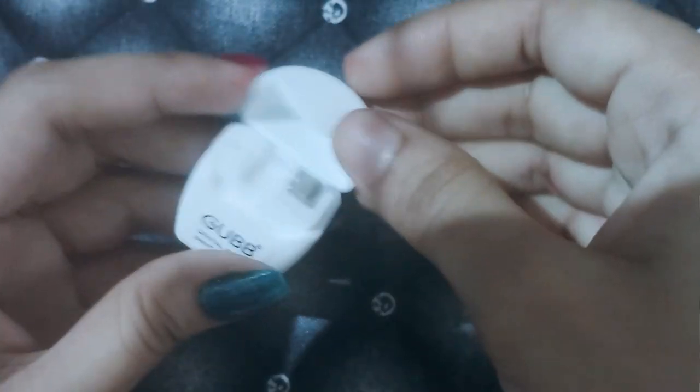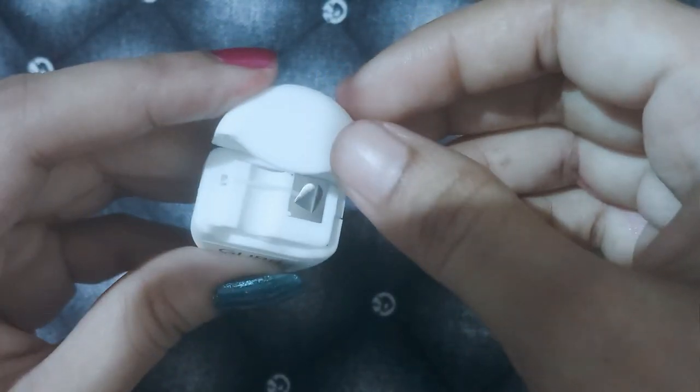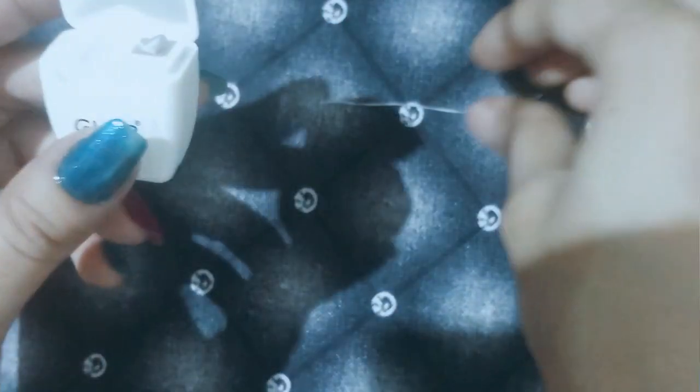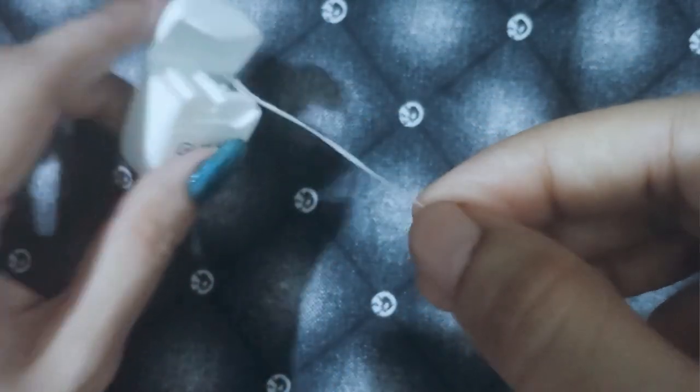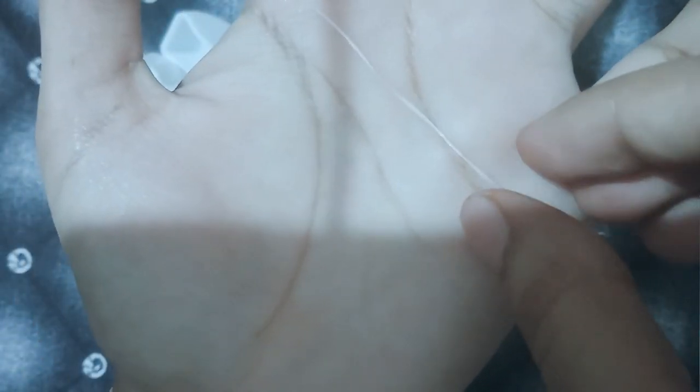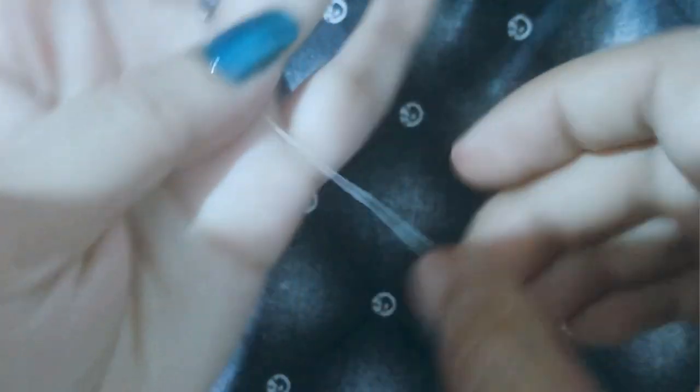Slides easily between the teeth. Be careful not to let the floss snap or pop between the teeth. Gently slide the dental floss between the teeth in a zigzag motion. Move back and forth gently.